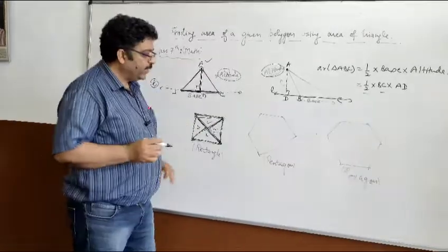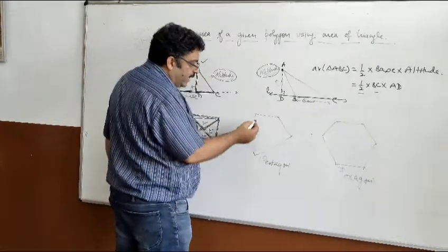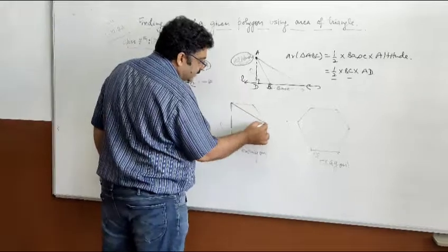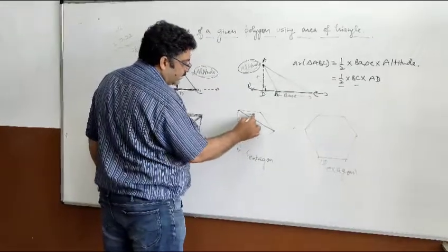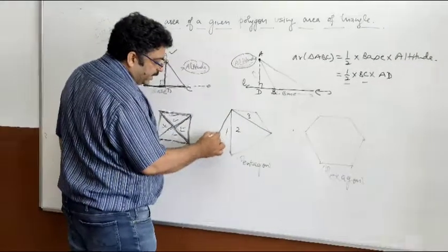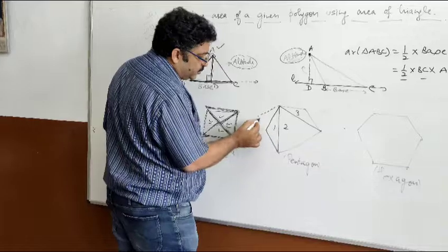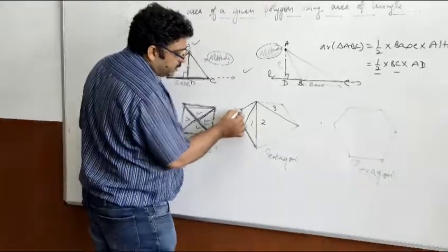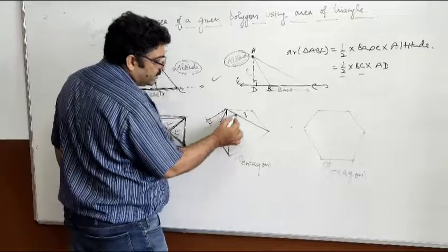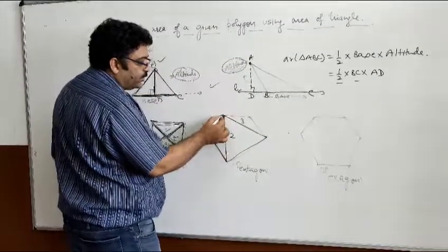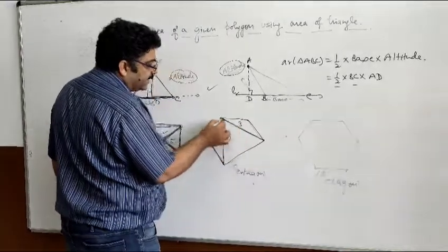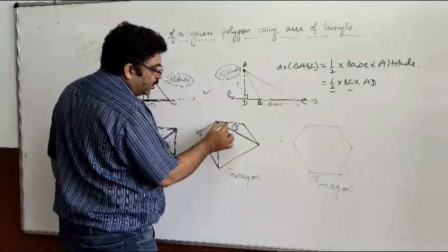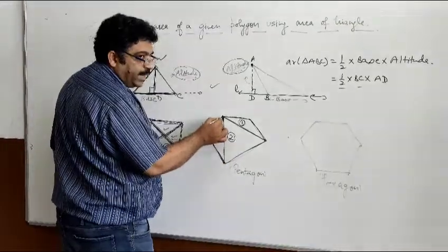Similar thing you can do in pentagon also. You have to find out how to divide the pentagon into triangles. You can draw the diagonals and see that the pentagon is divided into three triangles — one, two, and three. You can find the base and the altitude for each triangle as shown earlier. After using the formula half base into altitude, you can find the area of each triangle. After finding the area of triangle one, triangle two, and triangle three, you sum up all three to calculate the area of the whole pentagon.